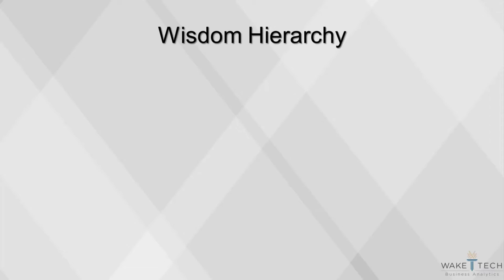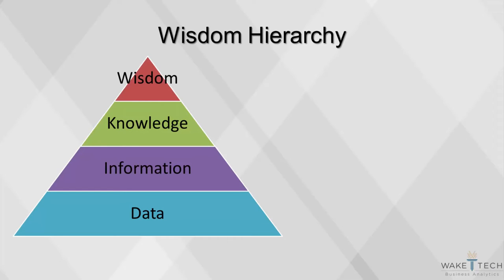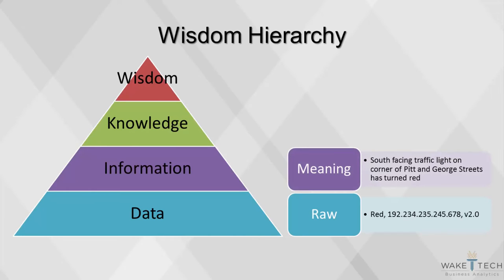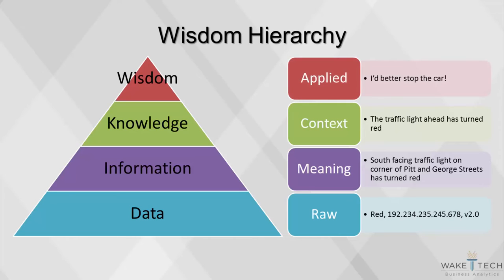A common method of understanding the relationship between data, information, knowledge, and wisdom is by using a pyramid. This graphic is called the DIKW pyramid, or the wisdom hierarchy, and it illustrates that data is the foundation upon which decisions can be made. Information is defined in terms of data, knowledge is defined in terms of information, and wisdom is defined in terms of knowledge. Data are numbers or text without any context. Information provides meaning from data, often combining multiple data points to produce a tangible idea. Knowledge provides context from the information, making it directly applicable to a situation. Wisdom applies the knowledge to make a decision.